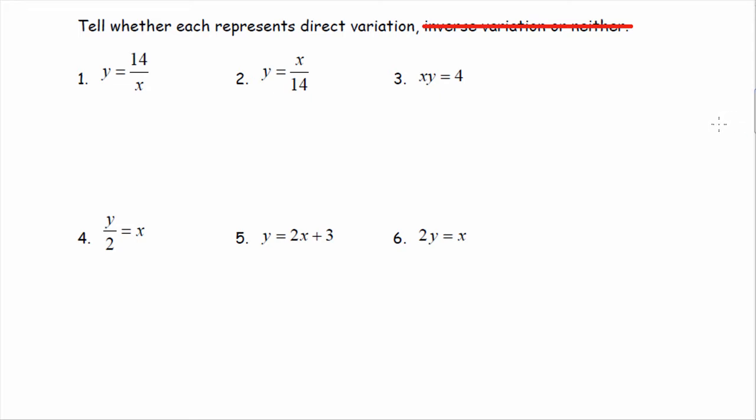Tell whether each represents direct variation. We're just looking at, is this direct variation? So I'm going to go through these six examples. y equals 14 over x. This is not, because we're dividing by x. For direct variation, we cannot be dividing by x. We need x to be multiplied by, not divided by. So, this would be not direct variation, because we're dividing by x.